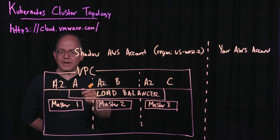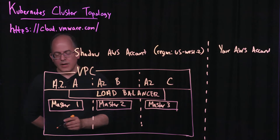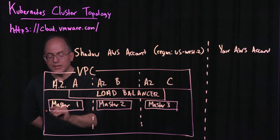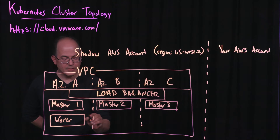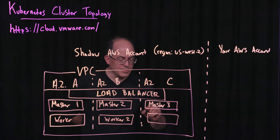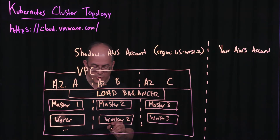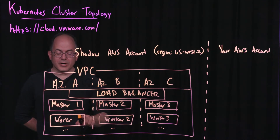The masters are only accessible via the load balancer, which exposes only the necessary networking ports. When workers are created, they will also be created within the same availability zones. I'm going to draw three workers for today, but the cluster can scale quite far and you might have many workers distributed across all three zones. These workers are going to be on a private network, again for security purposes.